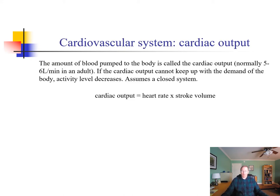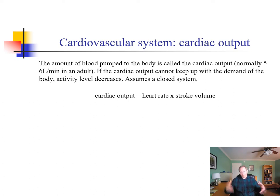Blood coming out of the heart is referred to as cardiac output — how much per minute is actually leaving the left ventricle. In a normal adult at rest this is about 5–6 liters per minute. Cardiac output changes with demand: standing up, walking, or running all require increases. Cardiac output is determined by two things: heart rate and stroke volume. It's simply their product — if stroke volume is 100 mL and heart rate is 60 beats per minute, then cardiac output is 6 liters per minute.